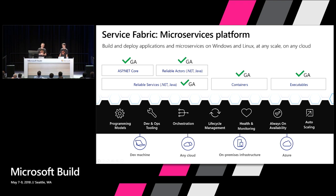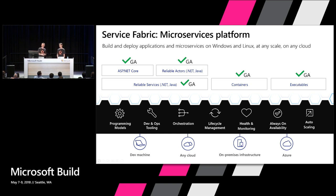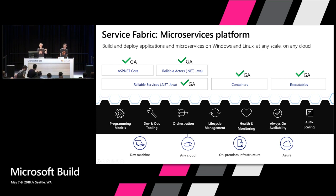One of the most exciting things is our 6.2 runtime release. We now have all the pieces in play: you can build .NET full framework applications on Windows, Java applications on Linux, and .NET Core applications across both Windows and Linux. We announced Windows container support last year, launched Linux container support at Ignite, and you've already been able to run executables. Right now you can mix and match — containers, reliable services, the runtimes we provided, or bring your own executable — all together in one platform.